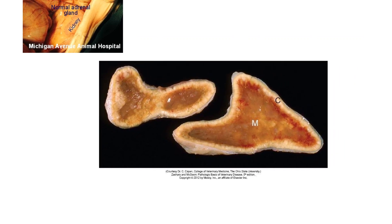Oftentimes when you cut an adrenal gland, it might look like just a piece of nondescript tissue. The cortex looks different than the medulla. This one has a relatively thin cortex and a large medulla. It's one way of verifying that you do have the adrenal gland, not just some other nondescript tissue. The two glands — left versus right — don't really look the same either.